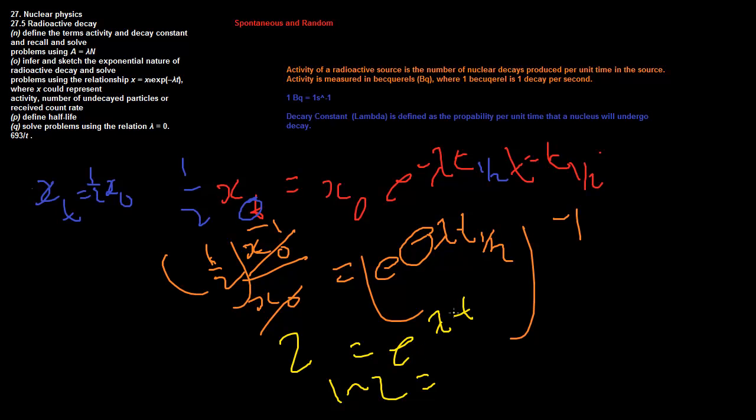And the natural logarithm of this is just equal to lambda t half. So now what we have to do is rearrange it. So t half, which is the half-life, is equal to natural log of 2 over the lambda constant. That's it. Very simple formula, right there.